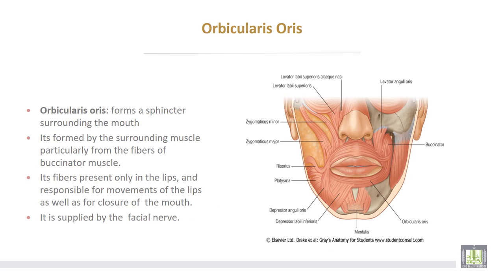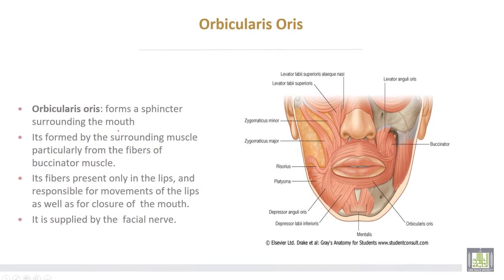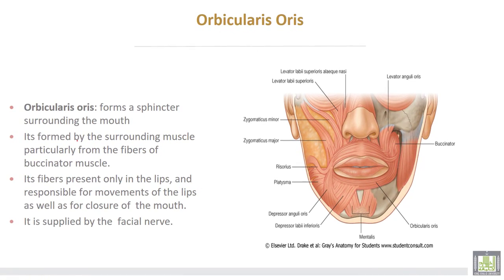The orbicularis oris forms a sphincter surrounding the mouth. It is formed by surrounding muscles, particularly from the fibers of the buccinator muscle. Its fibers are present only in the upper and lower lips and are responsible for movements of the lips as well as closure of the mouth. It is supplied by the facial nerve.